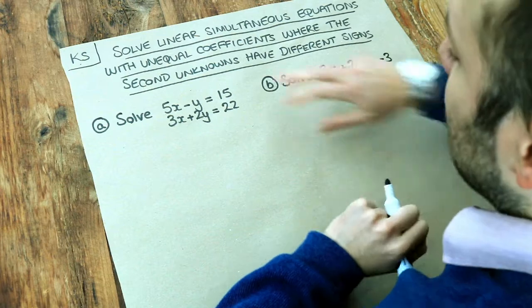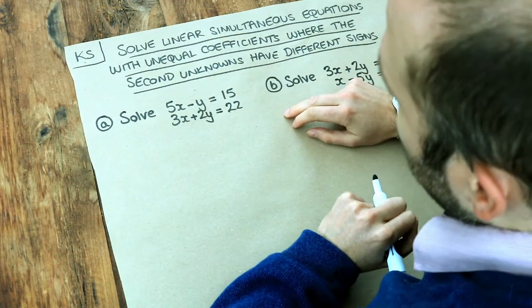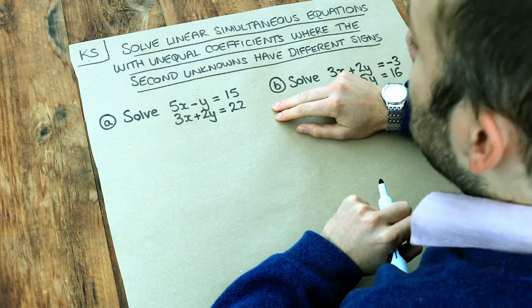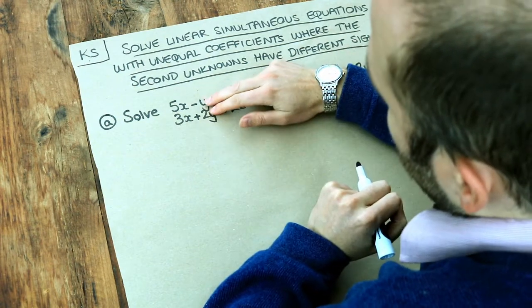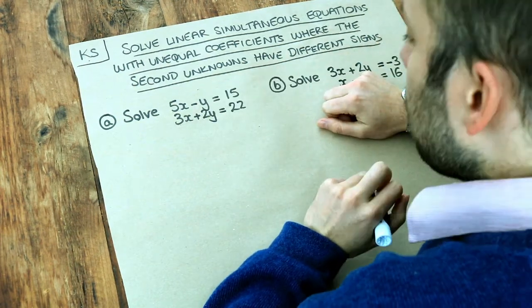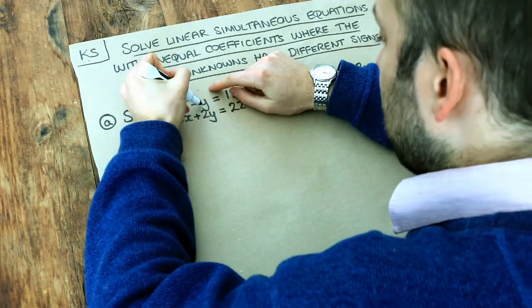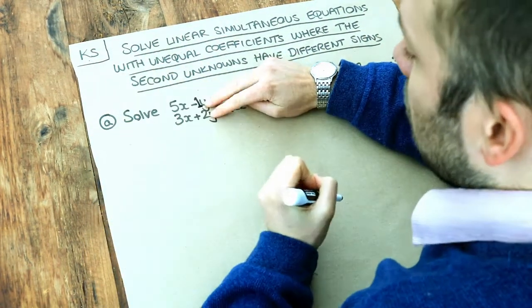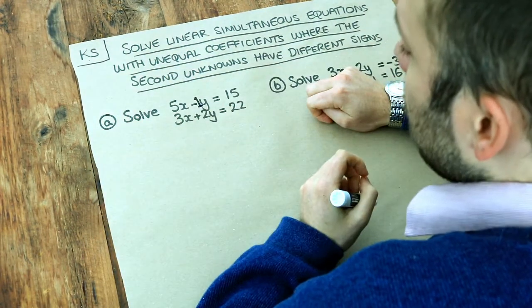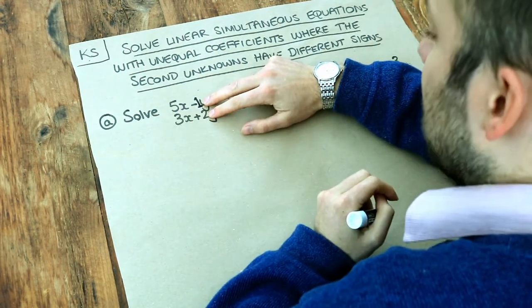Do you remember we scaled these two equations so the number in front of either the x or the y was the same. I'm going to just choose to make the numbers in front of the y the same. So if I make this 1 here, what do 1 and 2 both go into? Well they both go into 2. So I want these numbers to both be 2, either positive or negative.